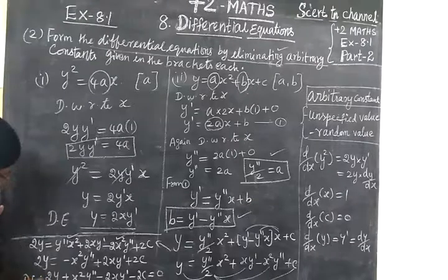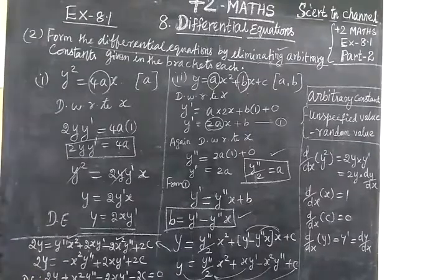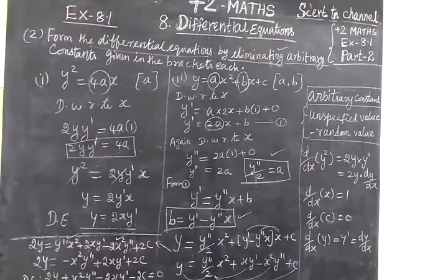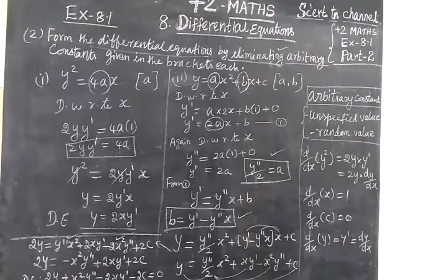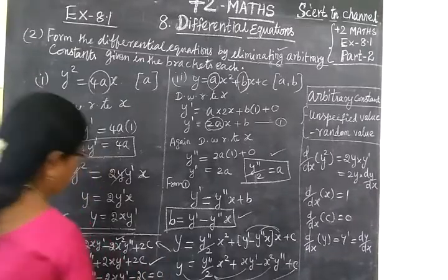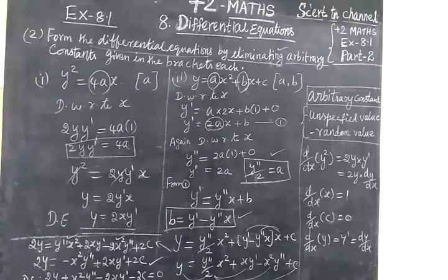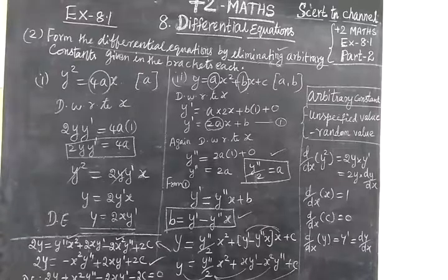So, the answer is: 2x²·y double dash plus 2y minus 2x·y dash minus 2c equals 0. This answer is correct. In the next class, Part 3, we will see the remaining two terms. Thank you, students.